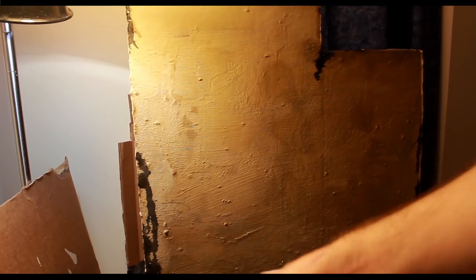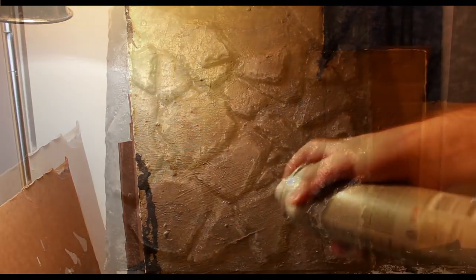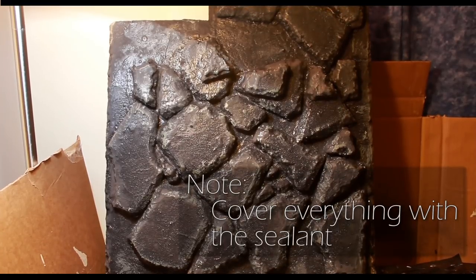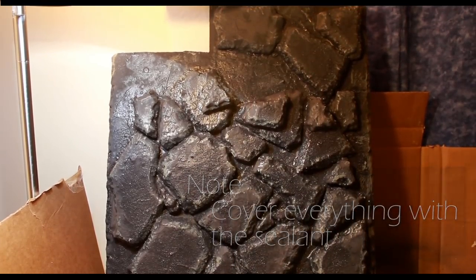As you can see here, I'm spraying on the sealant. You want to make sure to get the sealant on the back and the front. Make sure to use a non-toxic sealant. Let it dry all the way, all the fumes go away before you put it back in the cage.